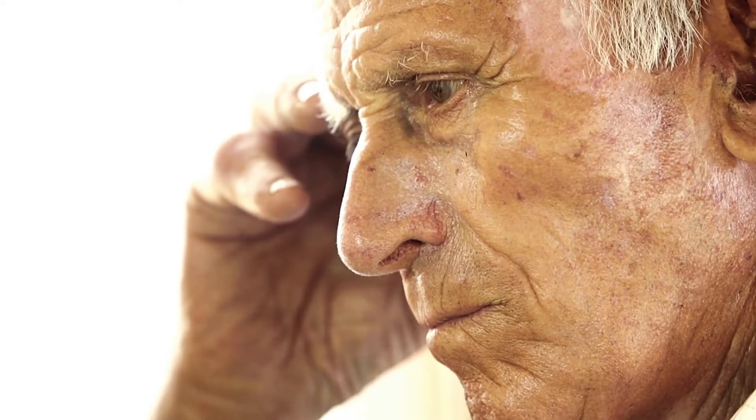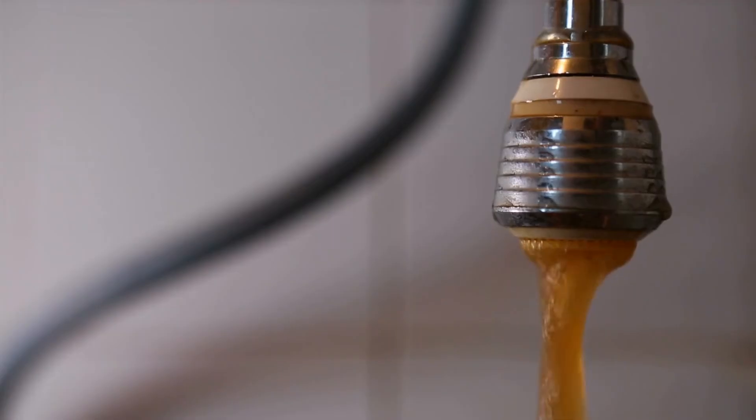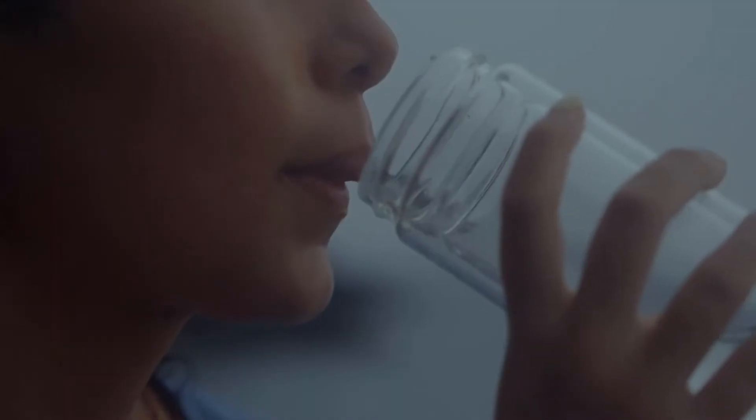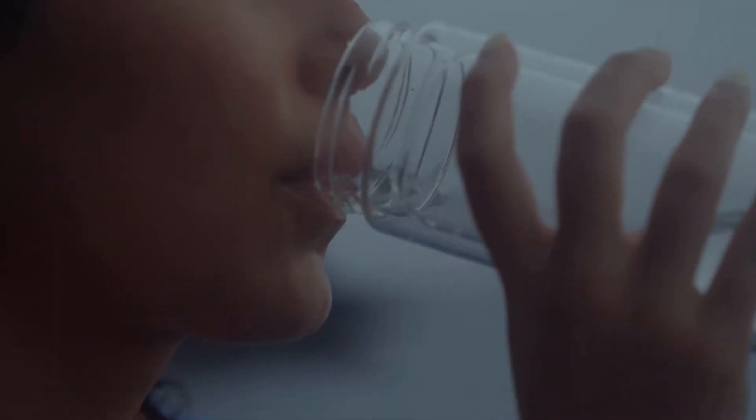Additionally, paying attention to urine characteristics is crucial. Dark yellow urine with a foul odor indicates severe dehydration. Normal urine should be pale yellow and transparent. Drinking more water is recommended, and consulting a doctor is advisable if abnormalities persist.